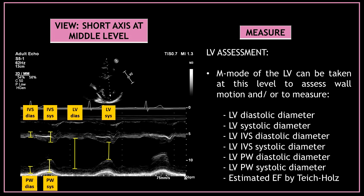You can also use M-mode to assess the left ventricle at this level. M-mode of the left ventricle can be taken here to assess the wall motion and to measure the diastolic and systolic diameter of the left ventricle, the diastolic and systolic diameter of the septum and posterior wall, and the estimated ejection fraction by the Teichholz method.